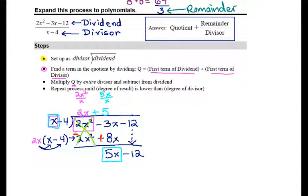Now, the next step is to take the 5 I just calculated, multiply it by the whole divisor, x minus 4, and put the result underneath my dividend. So, that's 5x minus 20.